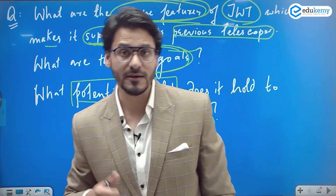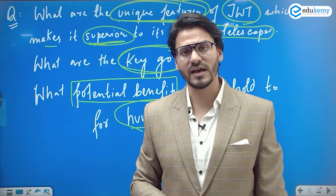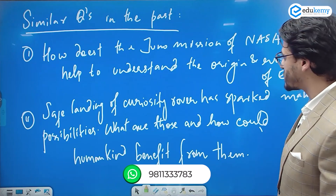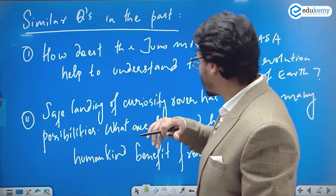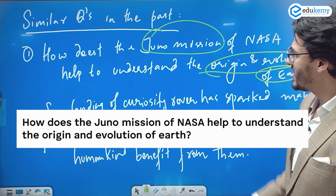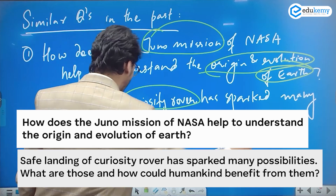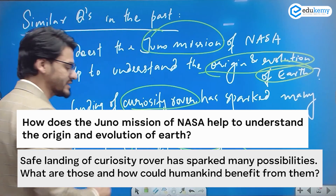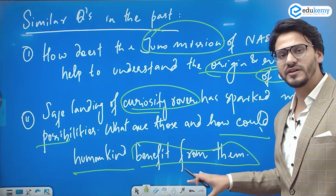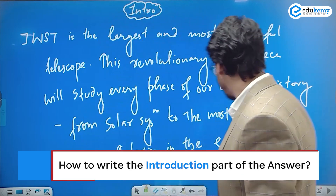Anyone who has qualified Prelims and is writing Mains would have studied the telescope's unique features, how to compare it with the Hubble Space Telescope, and its potential benefits and key goals. Similar questions have appeared before — on the Juno mission's role in understanding Earth's origin, and the Curiosity rover's possibilities for humankind. This has already been a trend in UPSC.